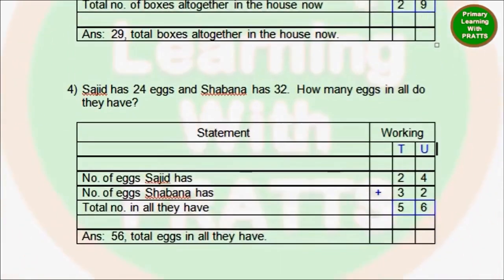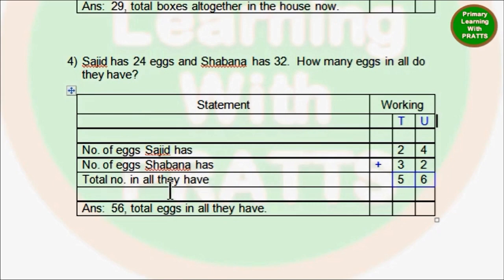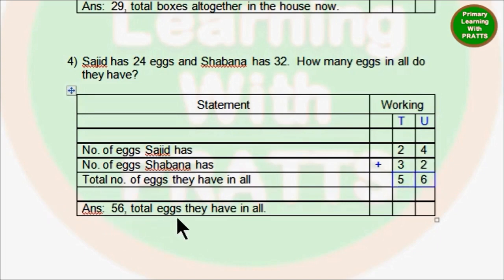Next question 4: Sajid has 24 eggs and Shabana has 32. How many eggs in all do they have? First statement: Number of eggs Sajid has — 24. Number of eggs Shabana has — 32. Total number of eggs they have in all: 4 plus 2 is 6, 2 plus 3 is 5. Answer: 56 total number of eggs in all. Even if you write just 'total eggs we have in all', that would also be considered correct.